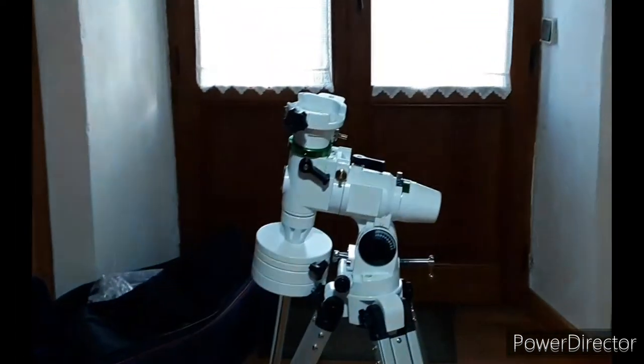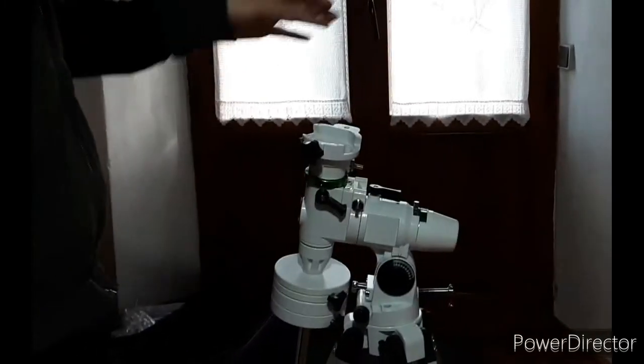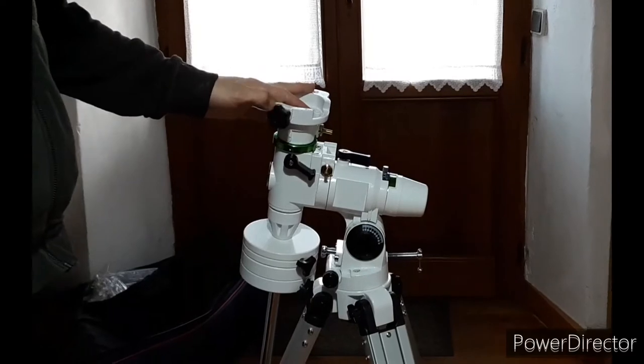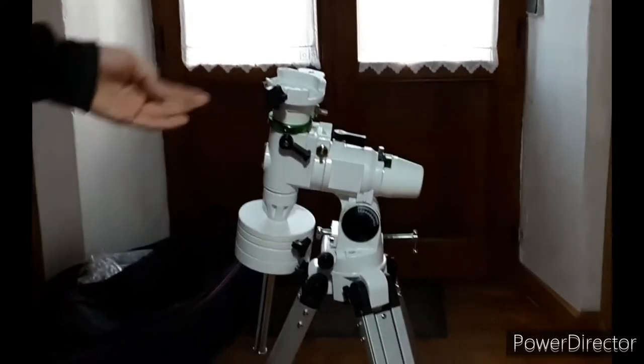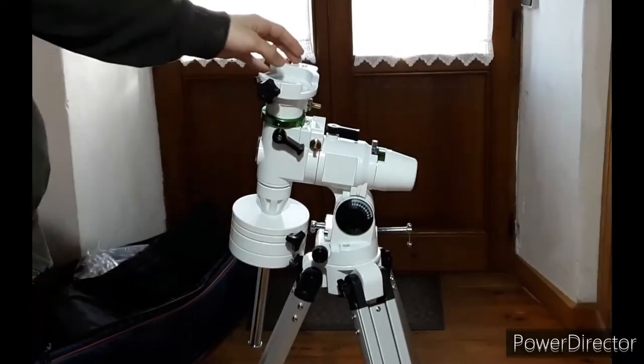And now the mount. There are three different types of mounts: the altazimuth, the equatorial like this one, and the catadioptric. In this video I'm going to show you the equatorial one, but another day I'll take my other telescopes to show you different types.